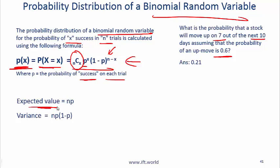The expected value is N, so in our scenario if N is 10 and probability is 0.6, so 10 into 0.6, the expected value is 6. The variance would be N which is 10 into P which is 0.6 into 1 minus P which is 0.4.